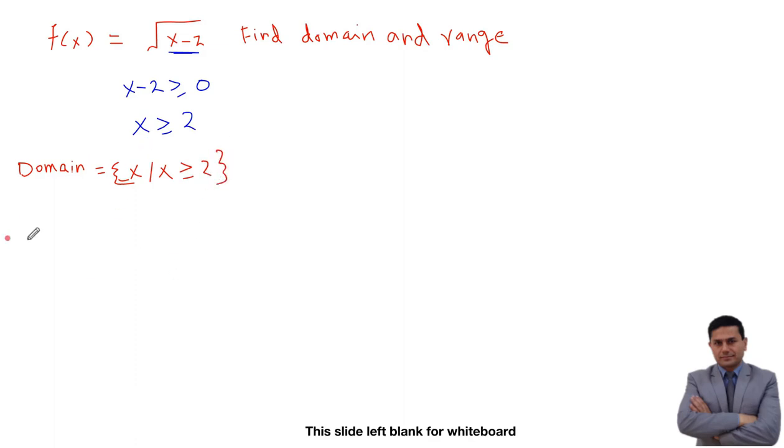Now to find out the range, what we need to do is we need to input the value of x in the function. f(x) equals square root of x minus 2. Replace with 2 obtained from x.